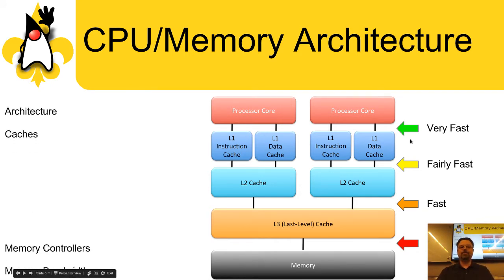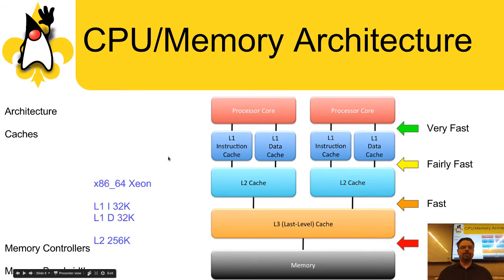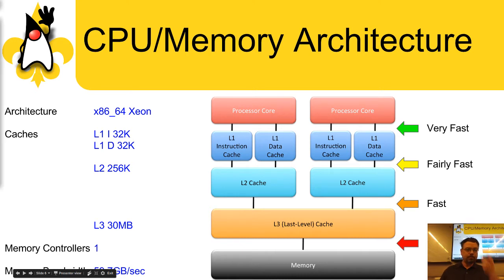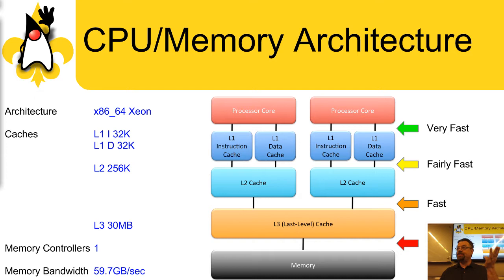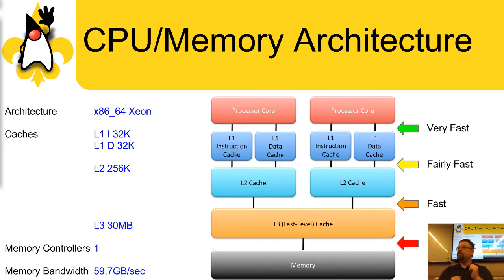Looking at different architectures: an Intel Xeon x86-64 processor has 32K of L1 instruction cache, 32K of L1 data cache, 256K of L2 cache, 30 megabytes of L3 cache, one memory controller, and can achieve about 60 gigabytes per second throughput to main memory. That's kind of limited. If you're trying to switch contexts frequently — moving data back and forth between the caches and main memory — you can saturate that pretty quickly, especially if you're processing a lot of streaming data.